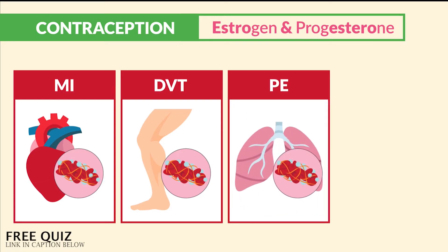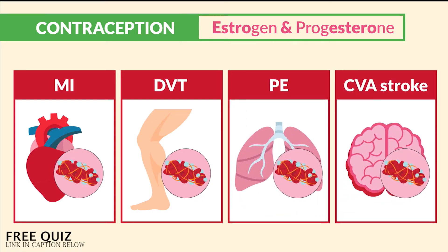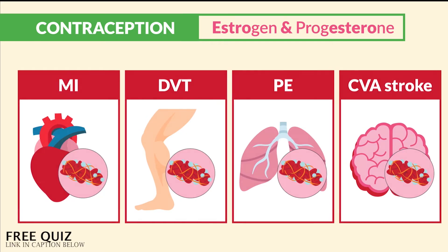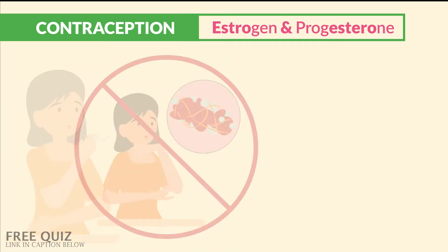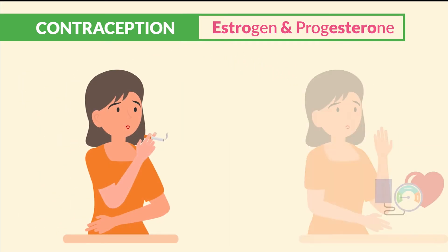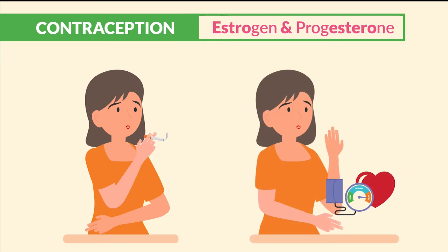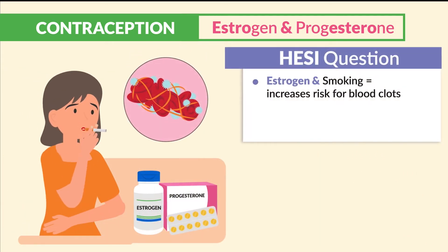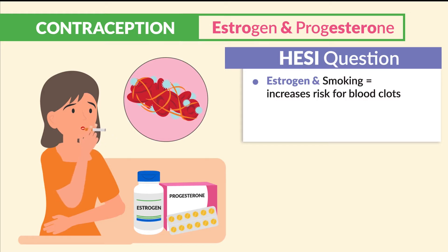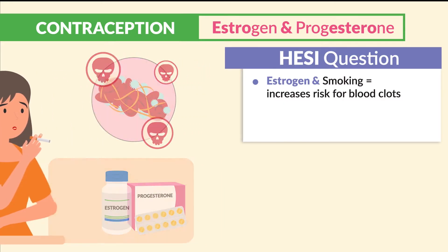We also avoid giving it to patients with a PE — clot in the lung — or even a CVA, a stroke, which is a clot in the brain. And we avoid giving it to those with a high risk for clots, like those who smoke or have hypertension. The HESI mentions that estrogen and smoking means an increased risk for blood clots. So if you smoke and take birth control, watch out for blood clot city.